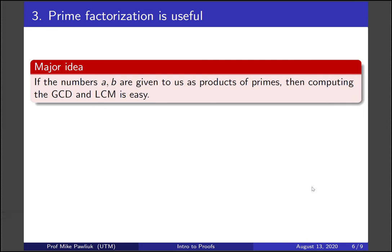The major idea for us now is that if numbers A and B are given to us as products of primes, then computing the GCD and the LCM is easy. So the form in which the number is given to us matters a lot. Let's see why that's true.